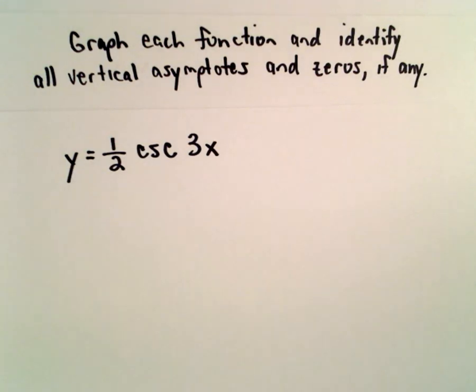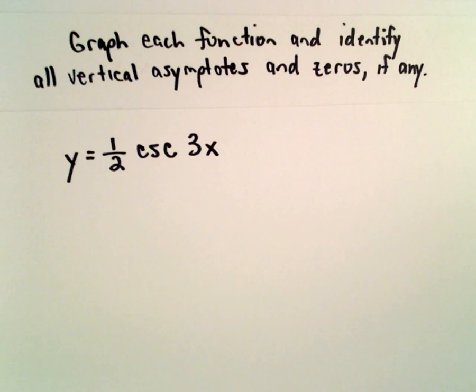Here I'm going to graph the function y equals one-half cosecant of 3x. We'll pick out the vertical asymptotes and zeros, if any.